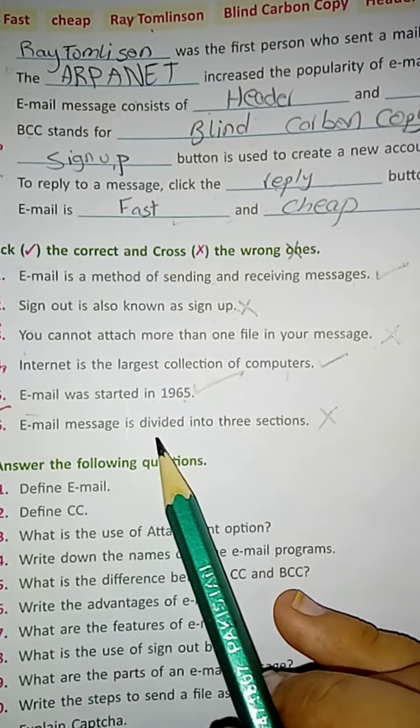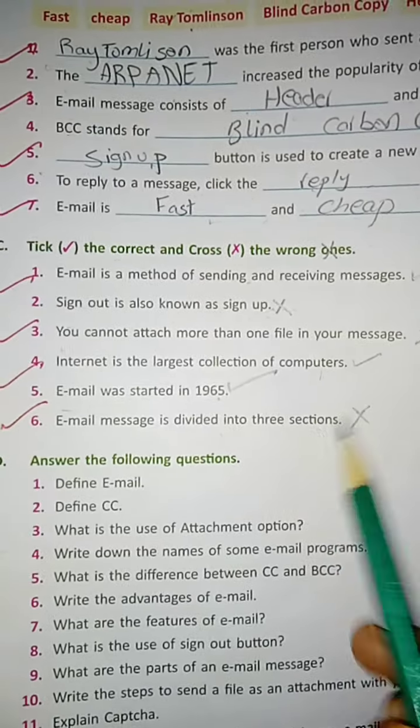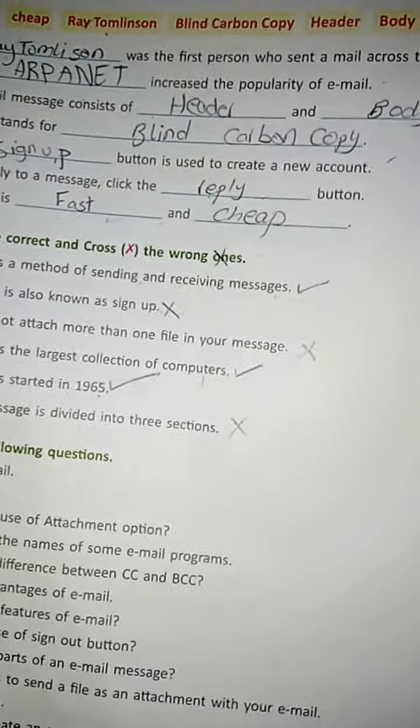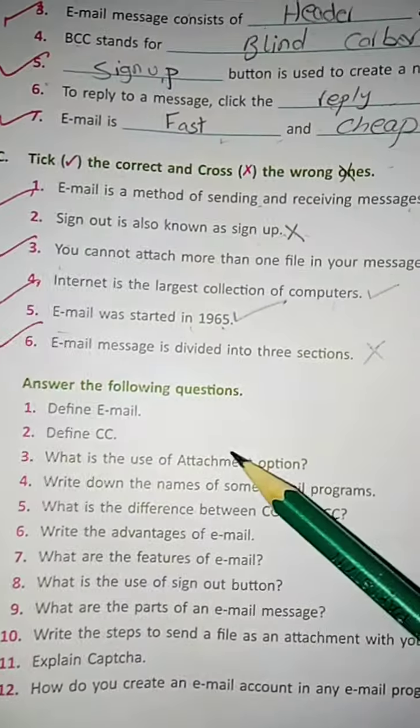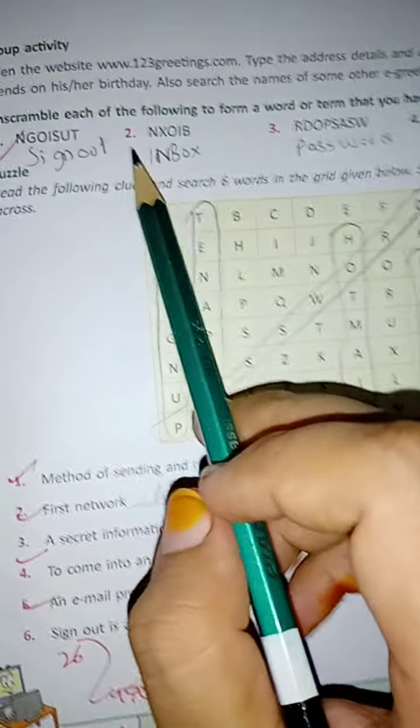Email message is divided into three sections: false. Next we have answer the questions. We'll solve them in the notebook. Next we have jumbled words.